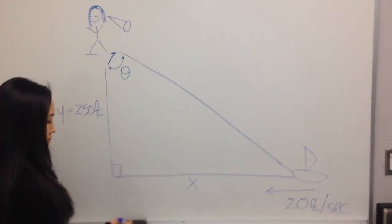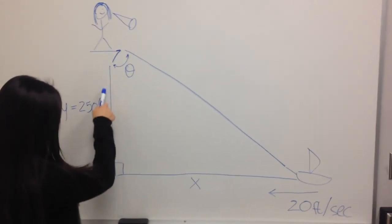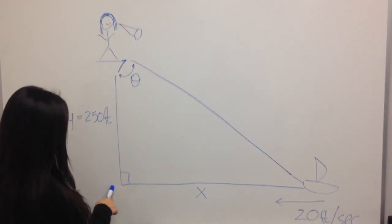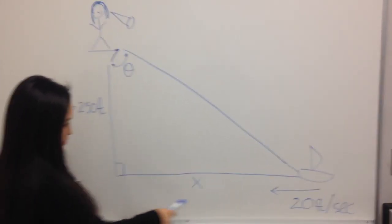We also know this is a right triangle because she is 250 feet from the boat on the shoreline.